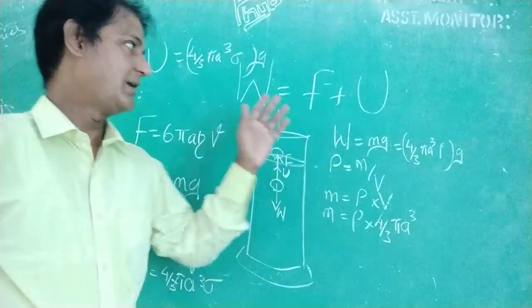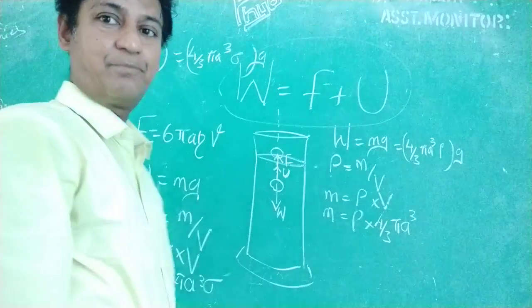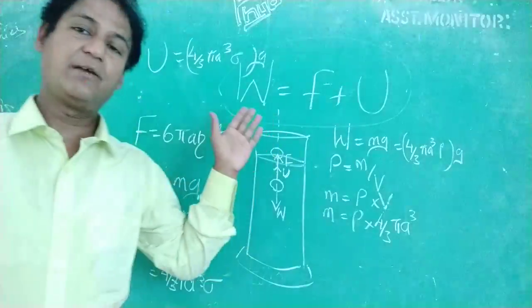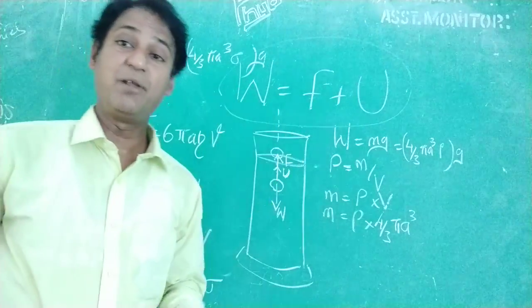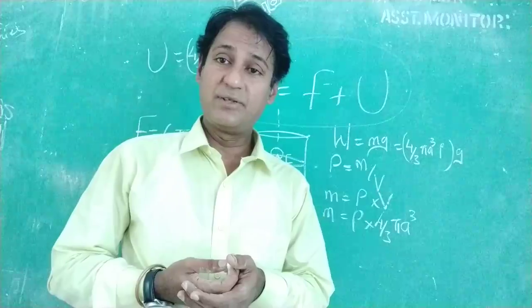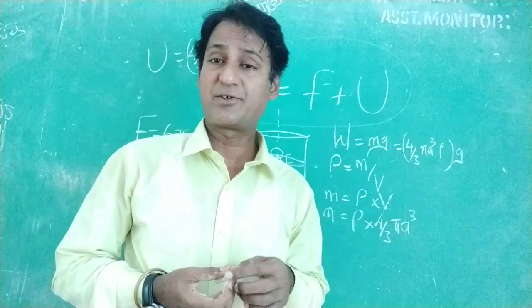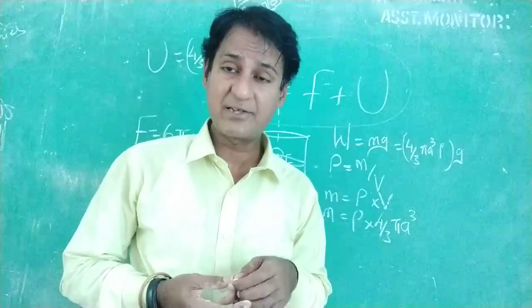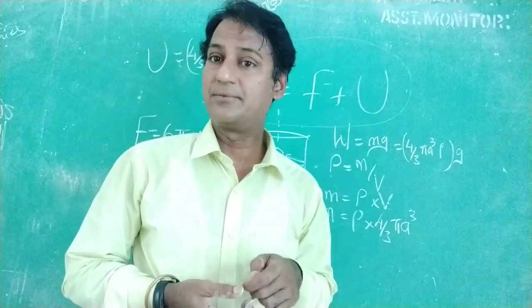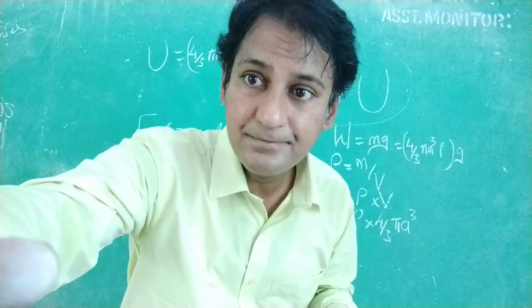And this is the entire thing we need to apply in this formula W is equal to F plus U. So this is one example which we are going to apply in Millikan's oil drop method to find out the charge of an electron. So let's see that video next. Thank you.